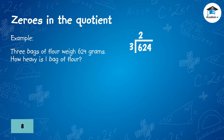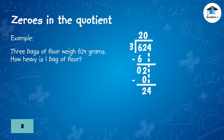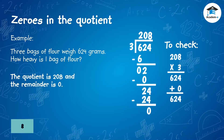Multiply the partial quotient and divisor: 2 times 3 is 6. Subtract: 6 minus 6 is 0. Bring down the next digit 2. Divide the tens: 2 divided by 3 — no groups of 3 in 2, so put 0 in the quotient. Subtract the product of 3 and 0 from 2: 2 minus 0 equals 2. Bring down 4. Divide 24 by 3 and subtract the product of 3 and 8 from 24: 24 minus 24 is 0. The quotient is 208 and the remainder is 0.